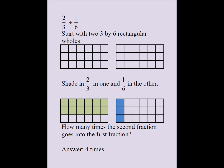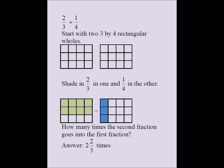Now, how many times does 1 fourth go into 2 thirds? I start with a 3 by 4 rectangle. I shade in 2 thirds and separately shade 1 fourth in blue. I'm asking how many times the blue patch goes into the green patch — how many blue patches do I need to cover the green patch? One entire blue patch covers part, another covers more, and then I need 2 thirds of the blue patch to cover the rest. So the answer is 2 and 2 thirds.